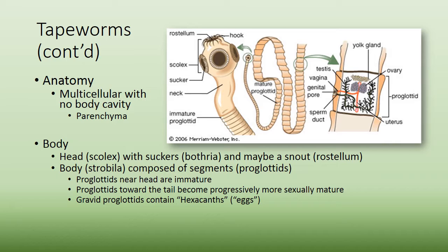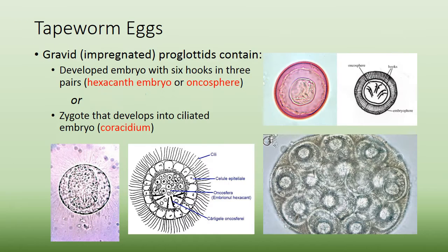Cestodes are multicellular with no body cavity, unlike nematodes. The body has a head with suckers, followed by a body composed of many segments called proglottids. Proglottids near the head are immature; as you move down, they become more sexually mature. The furthest proglottids are gravid — meaning pregnant — and contain hexacants, which are the eggs. Gravid proglottids break off and are shed in feces.